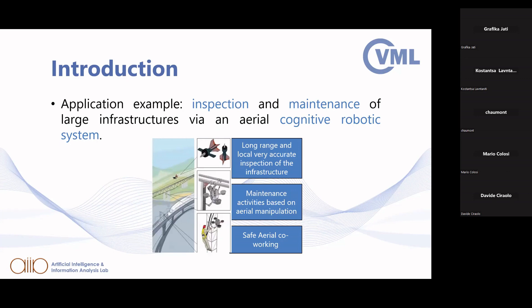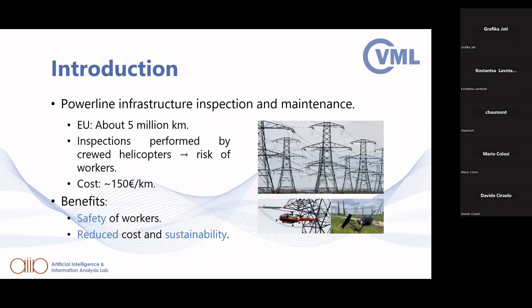One application example is the inspection and maintenance of large infrastructure using an aerial cognitive robotic system. This type of system may contain a large number of heterogeneous robots — for example, a different drone to perform long-range inspection, a different drone to collaborate with human workers. One example is power line infrastructure inspection, where currently crewed helicopters are used to inspect the lines. This involves risk for human workers due to potential accidents, so replacing them with autonomous robots can increase worker safety.